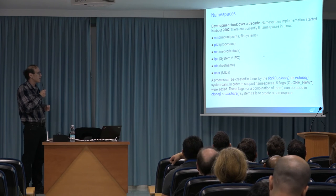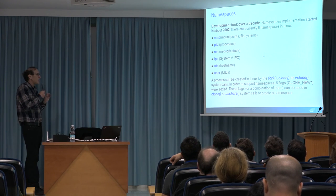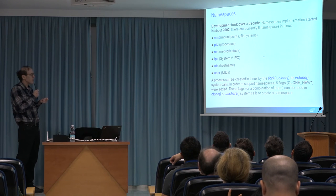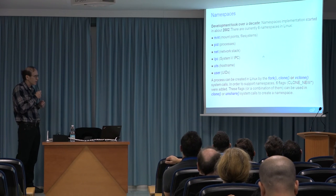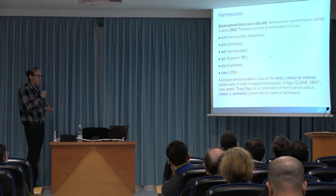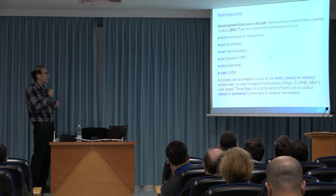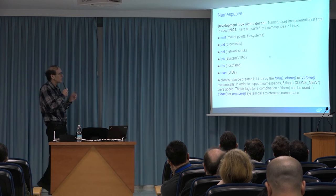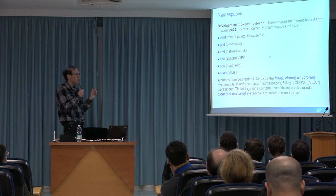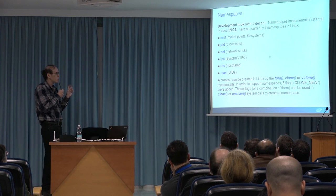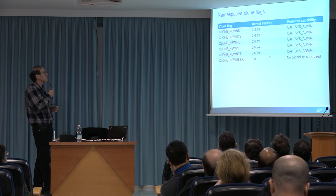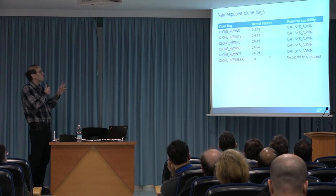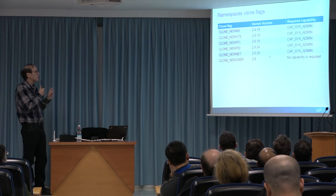In order to implement namespaces, six clone flags were added to the kernel. A process can be created by fork, clone, or vfork. These flags or a combination of them can specify which namespace to create. Here are the six flags in chronological order. All of them except user namespace require root — specifically CAP_SYS_ADMIN. CLONE_NEWUSER simply allows creating what are called non-privileged containers, where a non-root user can create a container in which they will be regarded as root.